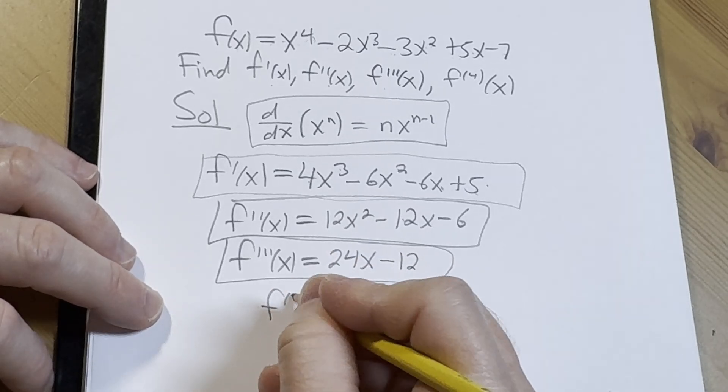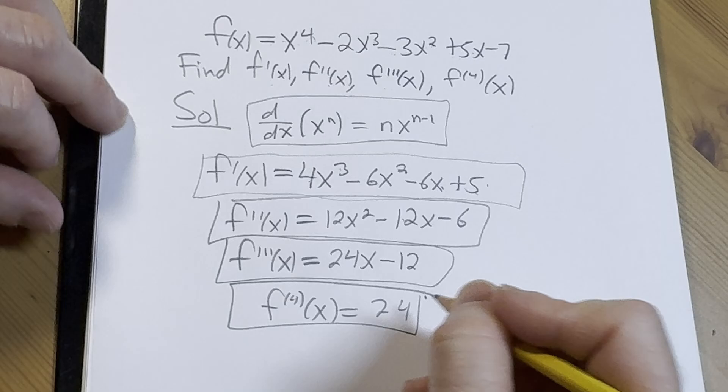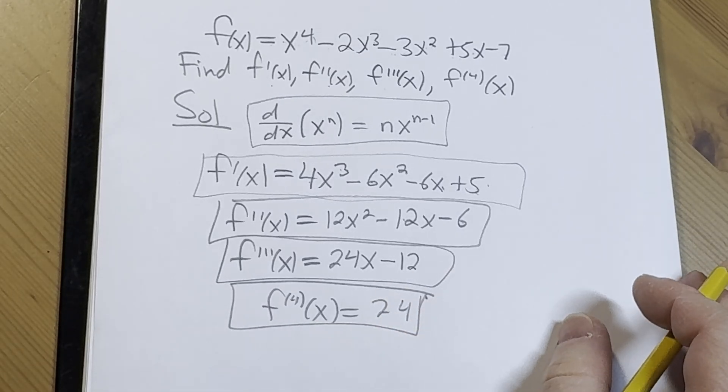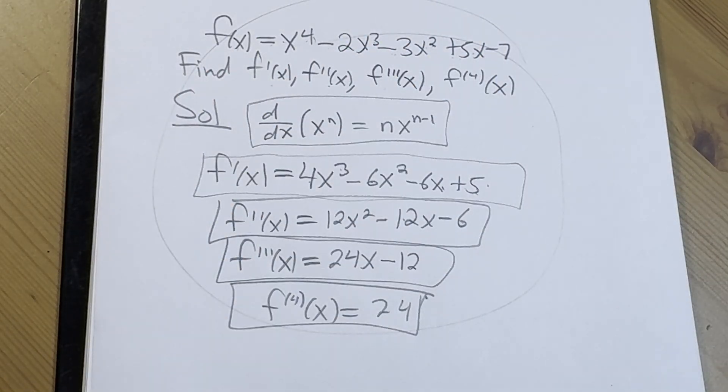And then last but not least, the fourth derivative is just going to be 24, because the derivative of 24x is 24 and the derivative of negative 12 is 0. So did that pretty quickly. Hopefully you learned some mathematics.